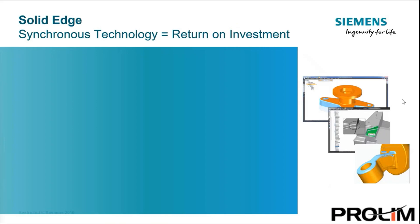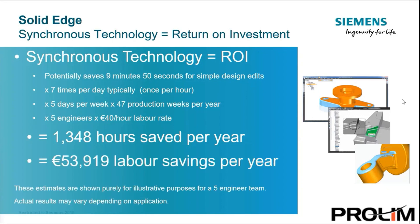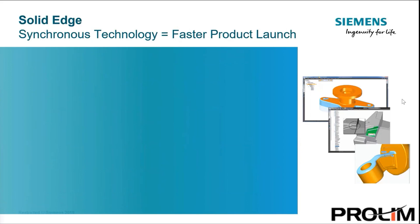Here's a simple equation: synchronous technology equals ROI. This is the real benefit of synchronous technology. If we start with reducing one 10-minute task and turn that into a 10-second task, and we currently do that task once an hour, that simple reduction in our workflow can generate an ROI of $53,000 — or maybe a cost avoidance of $50,000 a year — for a small five-engineer team. Wouldn't we all like to save $53,000 a year? Well, it's possible with adapting this new workflow.